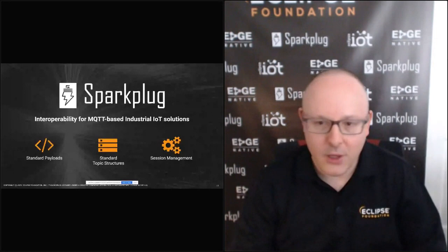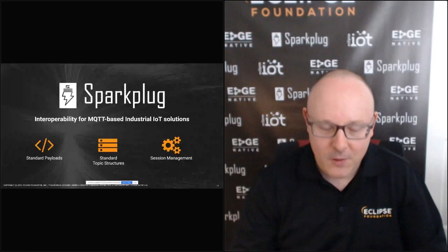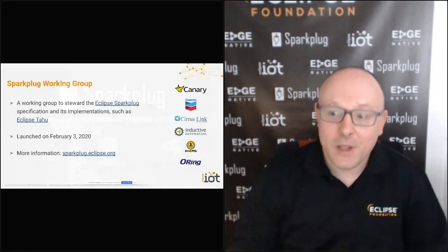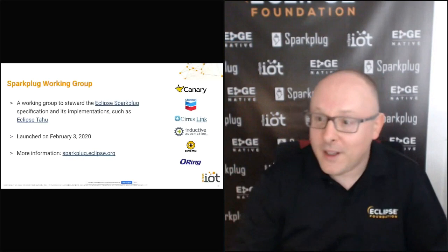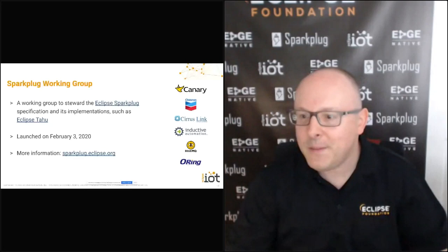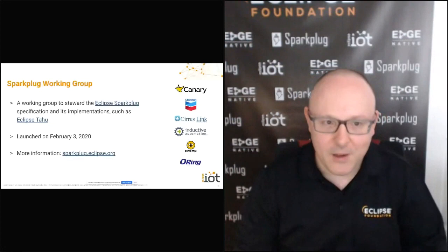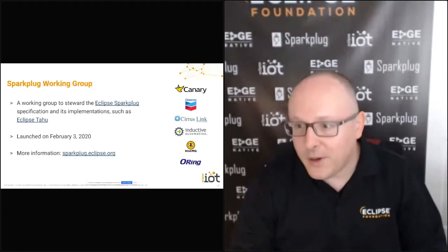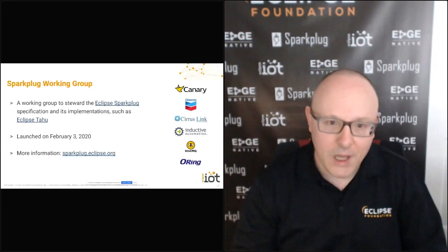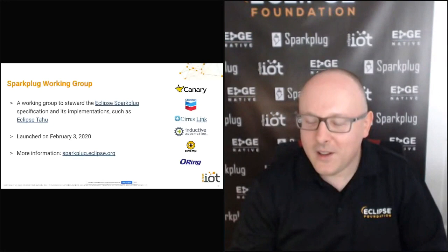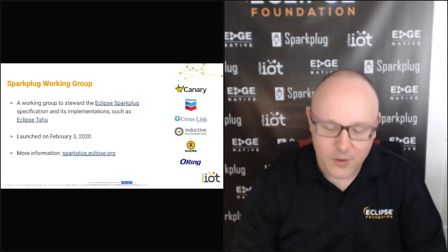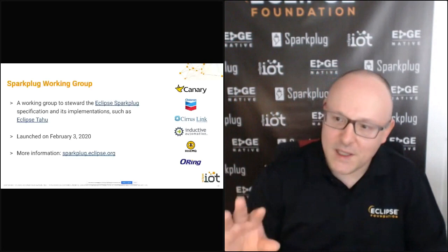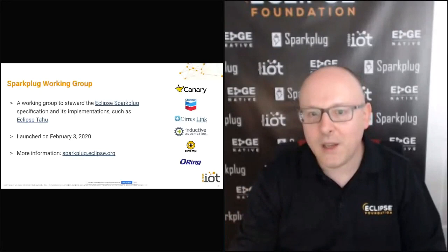If you are curious about Sparkplug, you can have a look at the Working Group's website at sparkplug.eclipse.org. The Sparkplug Working Group was just launched in February. The founding members are an interesting bunch — companies like Cirrus Link, Inductive Automation, and IVMQ, which were already members of our IoT Working Group, and then O-Ring and Canary, other players in the industrial automation space, plus Chevron. The fact that a big organization like Chevron has joined the Sparkplug Working Group shows they care very much about the specification. We have several other industry players in the membership process, so you can expect announcements from other big industrial players in the next few months.